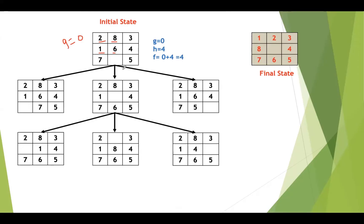Now, what are the three possible moves we can apply on this initial state? You can move the blank space upwards, or you can move it to the left side, or to the right side — three possible cases. So we take them: this is the left move, here we move the blank space upwards, and here it is the right side.